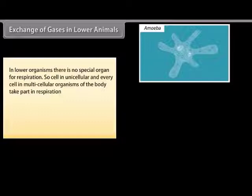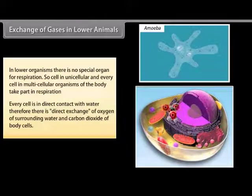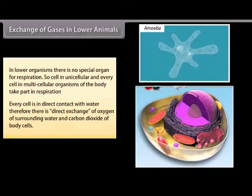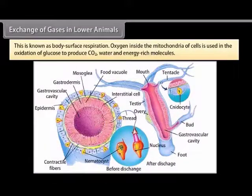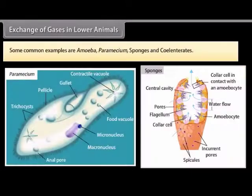In lower organisms, there is no special organ for respiration. Every cell in unicellular organisms, and every cell in multicellular lower organisms, takes part in respiration. Every cell is in direct contact with water, so there is a direct exchange of oxygen from surrounding water and carbon dioxide from body cells. This is known as body surface respiration. Oxygen inside the mitochondria of cells is used in the oxidation of glucose to produce CO2, water and energy-rich molecules. Common examples include Amoeba, Paramecium, sponges, and coelenterates.